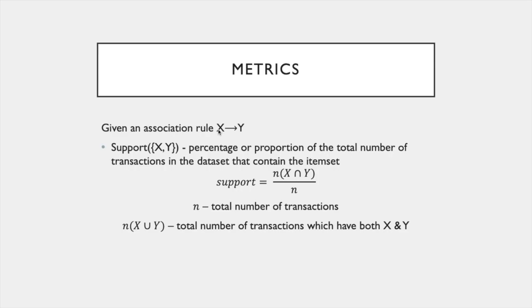For a given association rule X implies Y, X and Y represent sets of items — each could be a single item or multiple items. Support is calculated as the percentage of total transactions in the dataset which contain both item sets. Specifically, it is N(X ∩ Y) divided by N, where N(X ∩ Y) is the number of transactions containing both X and Y, and N is the total number of transactions.